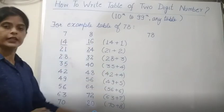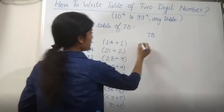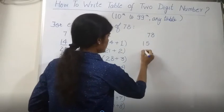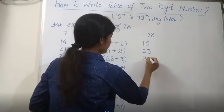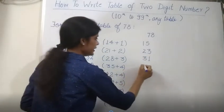Yes, now we will do the addition. 14 plus 1, that is 15. 21 plus 2, that is 23. 28 plus 3, that is 31. 35 plus 4, that is 39.